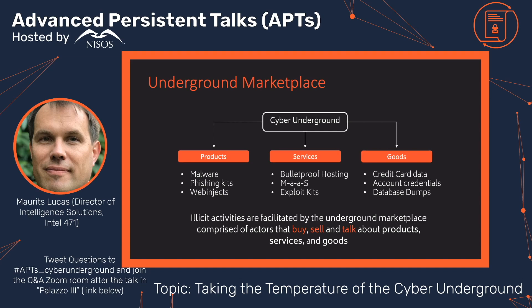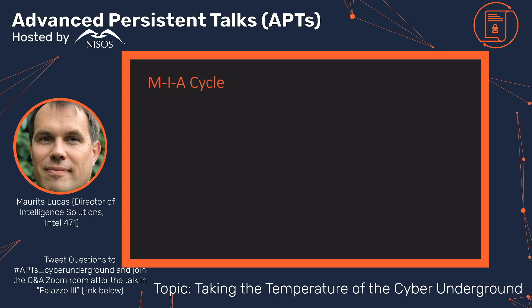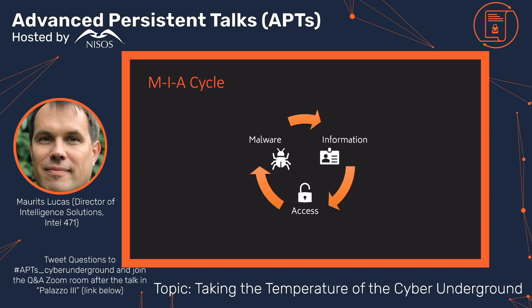The theme I'm using to show how all these moving parts fit together is what I call the MIA cycle — the malware information and access cycle. At its heart: you obtain some kind of information, in most cases account credentials. You use that to obtain access to an otherwise closed-off resource, like a PC. You use that access to install malware. You use the malware to steal more information. The cycle repeats. The longer you do this, it's like a flywheel — it starts to accelerate and gain momentum.